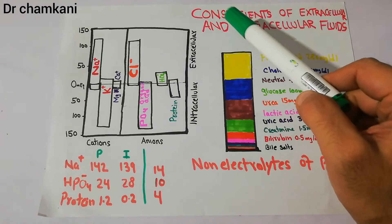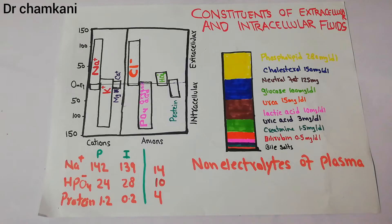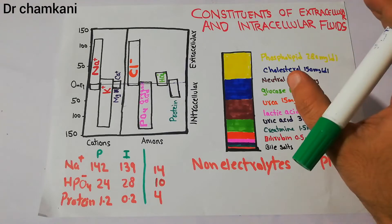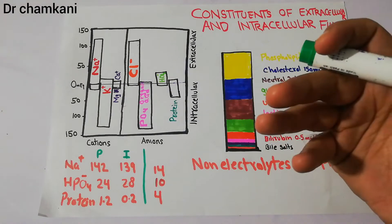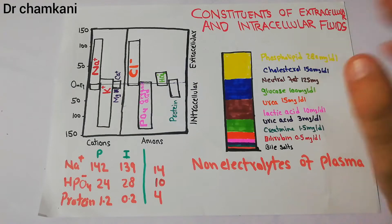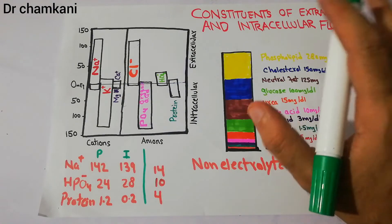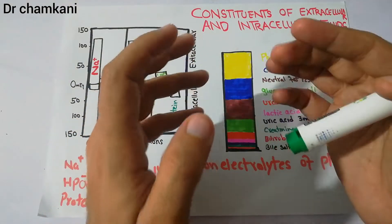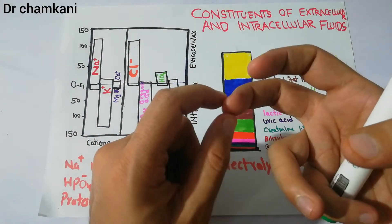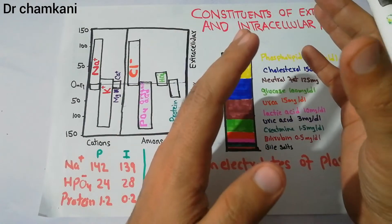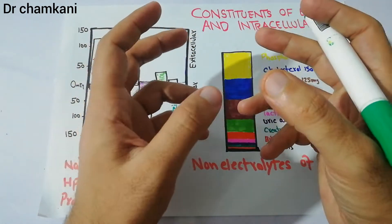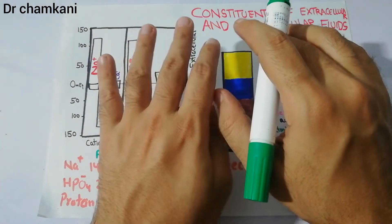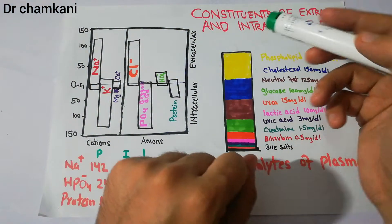In this lecture we are going to discuss the constituents of the extracellular and intracellular fluids. In our previous lectures we discussed that in the human body there are different compartments of intracellular and extracellular fluids, and as a whole there is around 42 liters of fluid or water in the body. In these fluids there are different constituents in different concentrations, and in this lecture we are going to superficially discuss those substances and their differences.